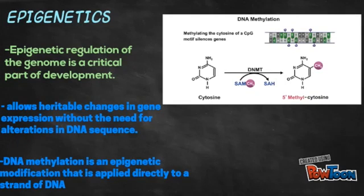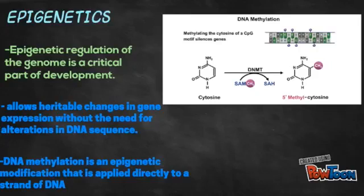Epigenetic regulation of the genome is a critical facet of development. Epigenetic control of gene expression allows heritable changes in gene expression without the need for alterations in DNA sequence. DNA methylation, which is the first epigenetic mechanism to be associated with imprinting, is an epigenetic modification that is applied directly to a strand of DNA.